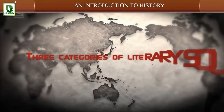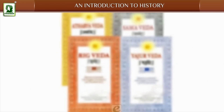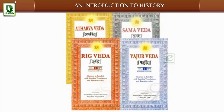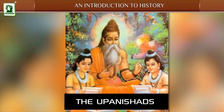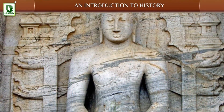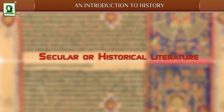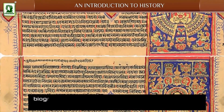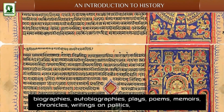There are three categories of literary sources. Religious literature of Hindus includes the four Vedas, the two epics — the Ramayana and the Mahabharata — the Bhagavad Gita, the Aranyakas and the Upanishads. Buddhist literature includes the Jatakas, Tripitakas, Mahavamsa and Dipvamsa. Jain literature includes the Angas. Secular or historical literature includes non-religious biographies, autobiographies, plays, poems, memoirs, chronicles, and writings on politics, law and medicine.